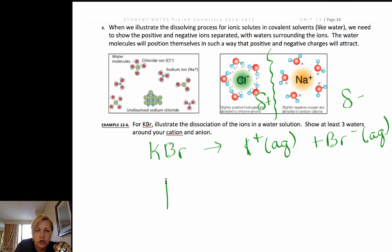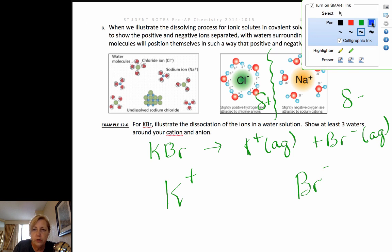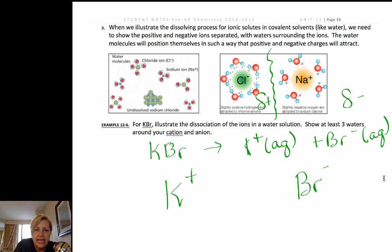If we want to draw the picture we want to show the potassium ion fully dissociated or separated from the bromide ion and then we want to draw water molecules around them. And for the potassium since it's positive we would put the oxygen end of water oriented towards these since it's the oxygen end that is partially negative and how many depends on the size of the ion. We showed you two, we asked you to show at least three.